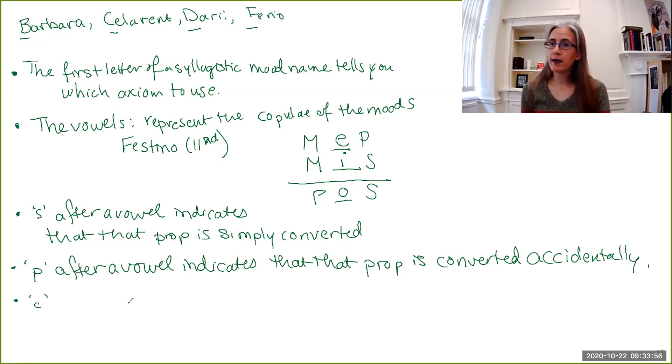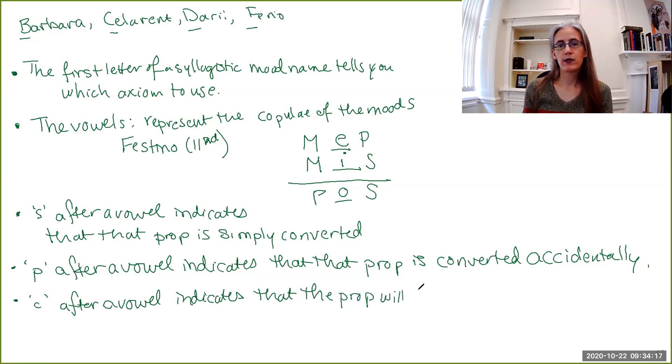Then we have the proof by contradiction method, the reductio ad absurdum that I introduced in the previous video. And that will get you a C. So C after a vowel indicates that the prop will be used in a proof by contradiction. So that's where the C is coming from. And then we have some syllogistic moods that have M in them.